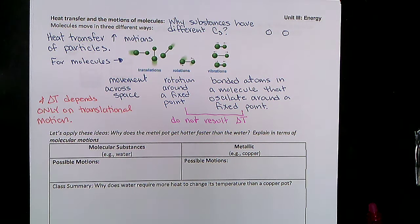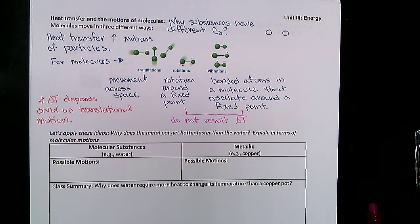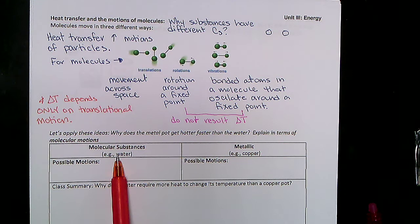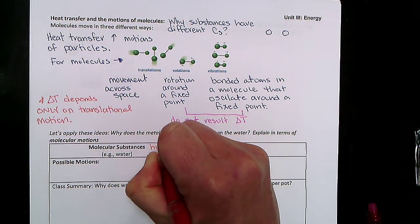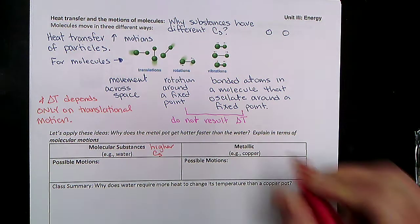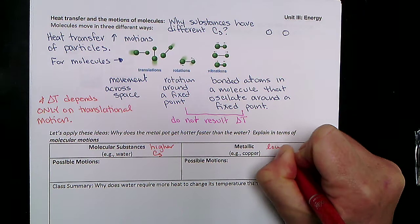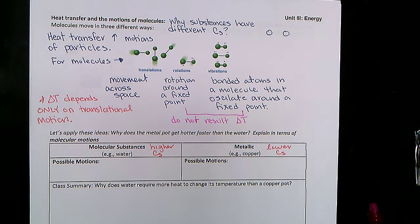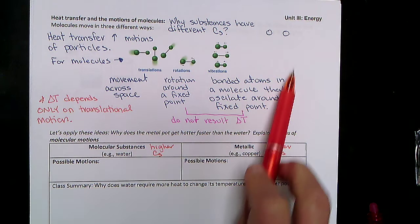If you have molecules that are bigger and have more bonds, they're going to lose more energy to vibrational motion and require more energy to change their temperature. We can now return to the water and copper example. If you're heating water on a stove in a copper pot, why does the copper heat up so much faster? Why does water have a higher specific heat than copper?